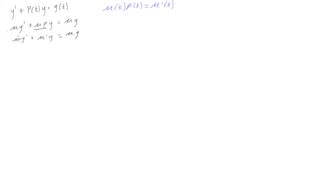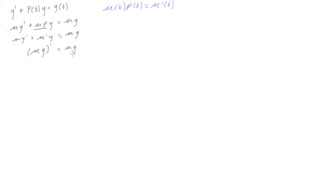Now this looks like the result of the product rule. If we take the derivative of mu times y, we would get mu times y prime plus mu prime times y. So we can rewrite this left-hand side as the derivative of mu times y — that's the same thing. And again, this is equal to mu times g.